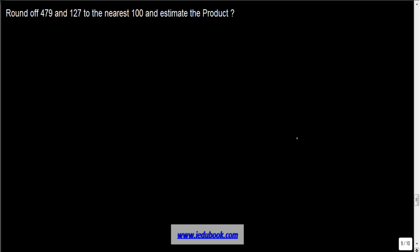Let's take a problem on rounding off and estimating the product. You're given two numbers, and the question says: round off 479 and 127 to the nearest hundred and estimate the product. So you have 479 and 127, and you need to round them off to the nearest hundred.